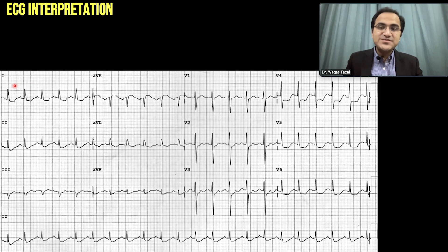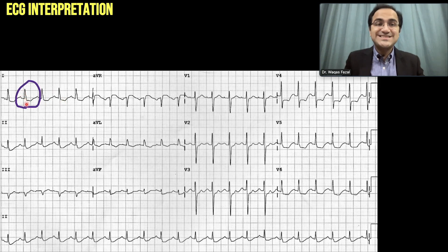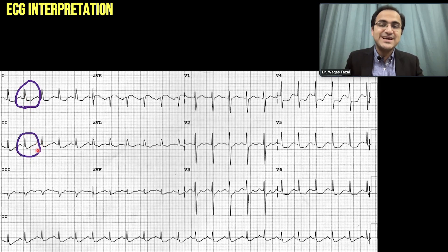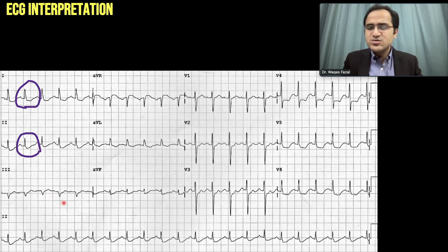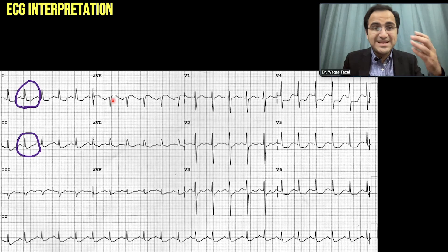Let us solve this ECG. Looking at lead 1, compare the P wave and PR segment with the ST segment — the ST segment is depressed. In lead 2, similarly, the ST segment is depressed. In lead 3, there is no ST segment depression, though the QRS complex looks wide. AVR is not showing ST segment depression; it shows slight ST segment elevation, but ST elevation in only one lead is not important — it requires more than 1mm in two or more contiguous leads, as discussed previously.